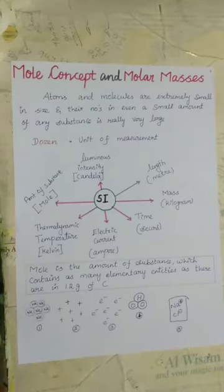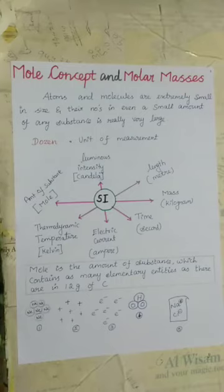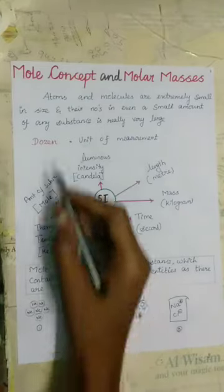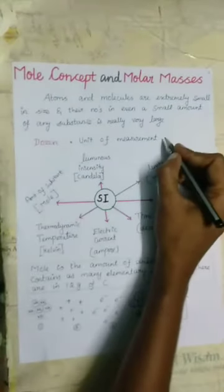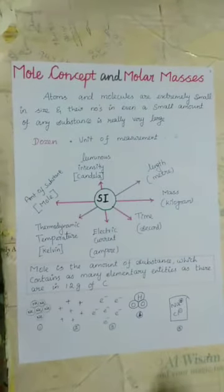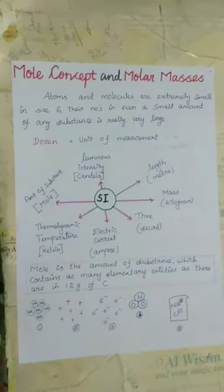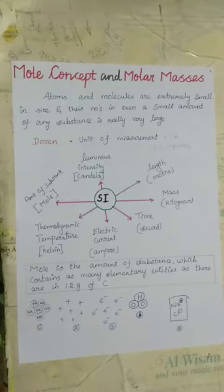Let me discuss about Mole Concept and Molar Masses. Atoms and molecules are extremely small in size, and their numbers in even a small amount of any substance is really very large. To handle such large numbers, a unit of convenient magnitude is required. For example, if we need 24 apples, we will collect them into 2 boxes — we denote 1 dozen for 12 items in each box. Dozen is a unit of measurement that helps to simplify and state large quantities.